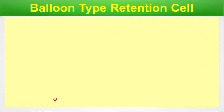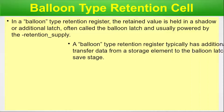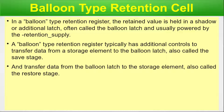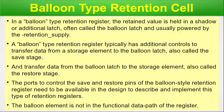Balloon type retention cell. In a balloon type retention register, the retained value is held in a shadow or additional latch — often called the balloon latch — usually powered by the always-on retention supply, a keyword from the CPF. A balloon type retention register typically has additional controls to transfer data from the storage element into the balloon latch (the save stage), and to transfer data from the balloon latch back to the storage element (the restore stage). The ports to control the save and restore pins need to be available in the design to describe and implement this type of retention register. The balloon element is not in the functional data path of the register.